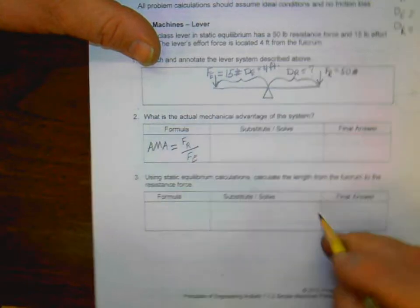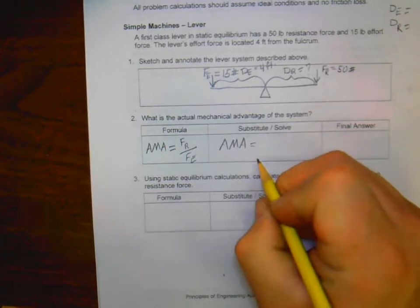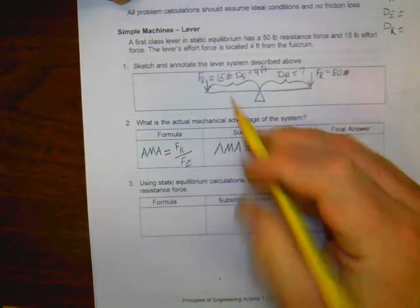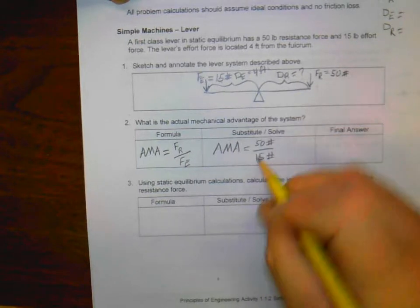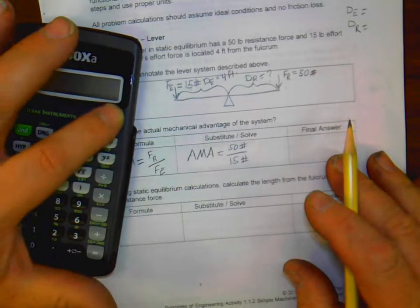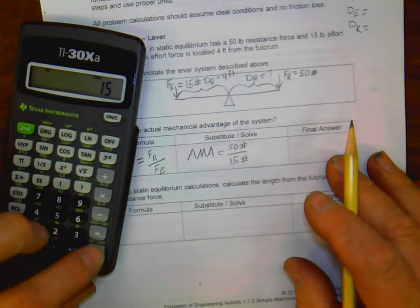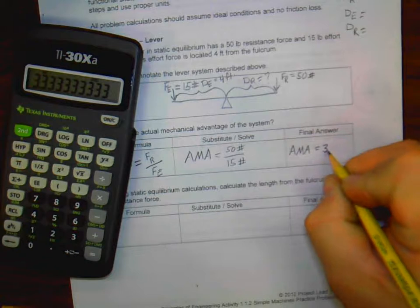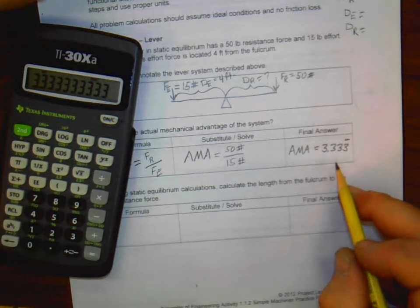So AMA equals force of the resistance is 50 pounds. And the force of the effort is 15 pounds. So there's my substitution and solving. I get my calculator out. So we turn it on. We take 50 divided by 15. And we get an AMA equal to 3.333 repeating. Now I'm going to keep, for right now, three decimal places out. And there's a reason why I want that.